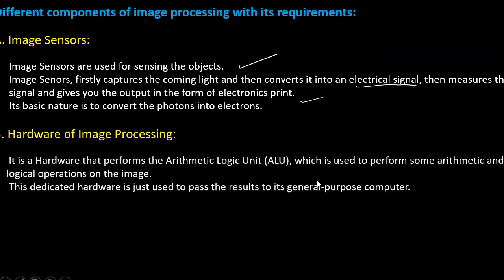The next component is the hardware of image processing. This is hardware that performs arithmetic and logic unit operations, which are used to perform arithmetic and logical operations on an image. If you take the image, it has to perform arithmetic and logical calculations — pixels should be added, pixels should be removed, and quantities need to be adjusted so that sharpness appears. So these operations have to be performed on the arithmetic logic unit.